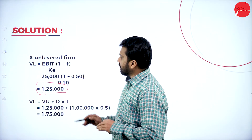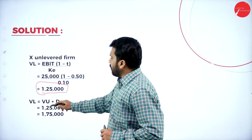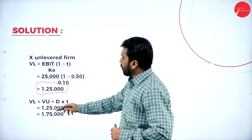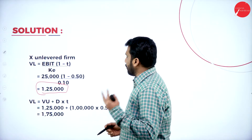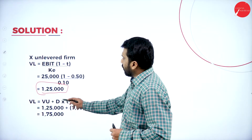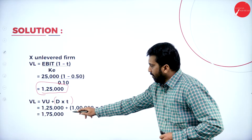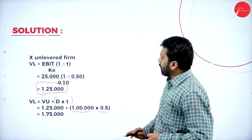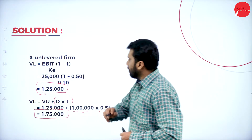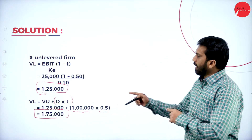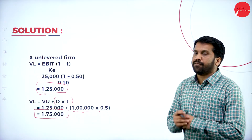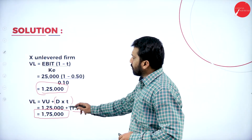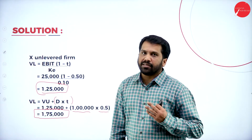For the levered firm (Y): VL = VU + (D × T) = 1,25,000 + (1,00,000 × 0.5) = 1,25,000 + 50,000 = Rs. 1,75,000. So the unlevered firm X has a value of Rs. 1,25,000 and the levered firm Y has a value of Rs. 1,75,000.